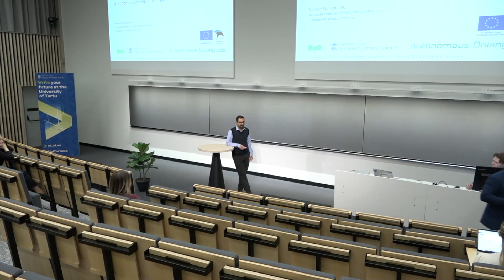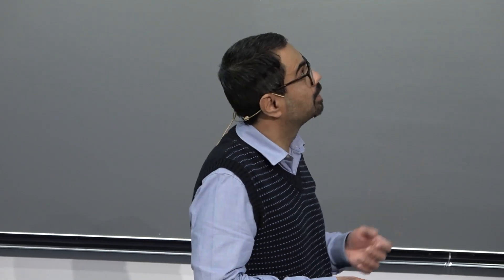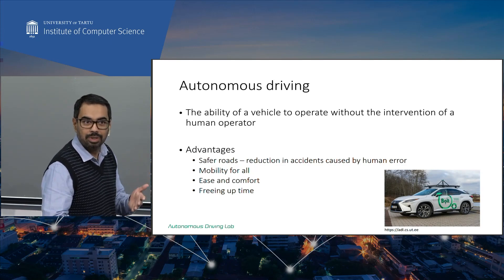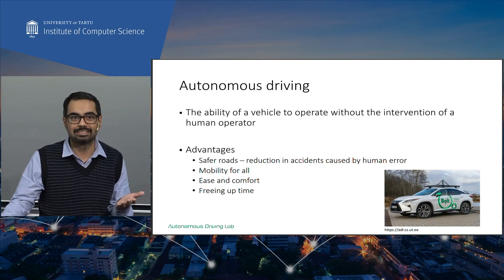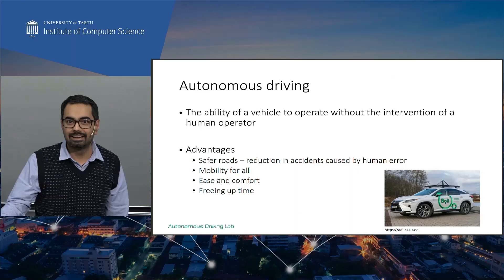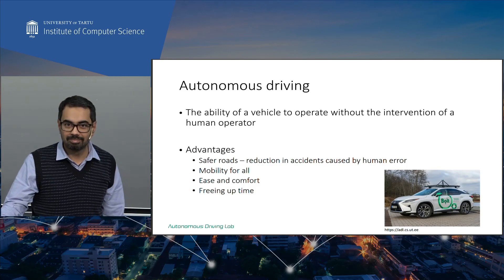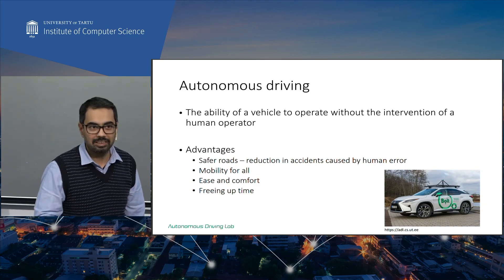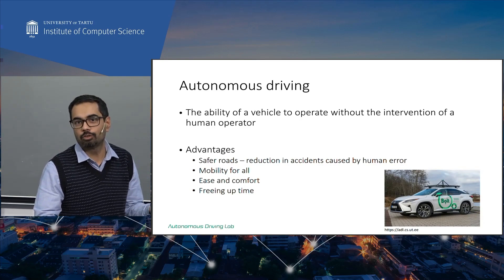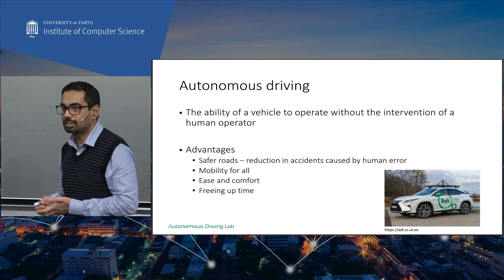Thank you for the nice introduction. I'm Navid and the topic of my presentation today is autonomous driving developments and challenges. I'd like to start by asking: how many of you can formally define what autonomy in autonomous driving is? Very simply, you can define it as the ability of a vehicle to move from point A to point B without the intervention of a human operator — no human intervening.